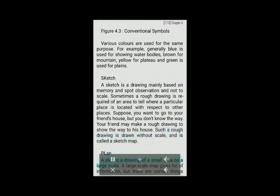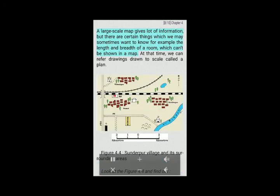Plan: A plan is a drawing of a small area on a large scale. A large scale map gives a lot of information, but there are certain things which we may sometimes want to know — for example, the length and breadth of a room — which can't be shown in a map. At that time, we can refer to drawings drawn to scale called a plan.